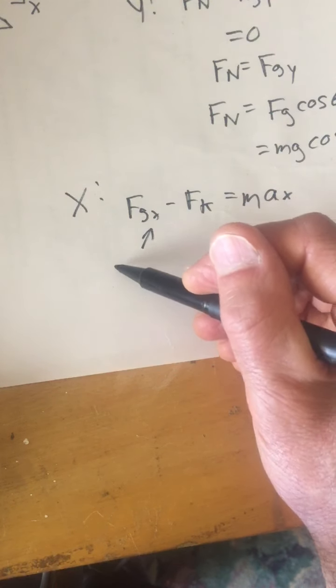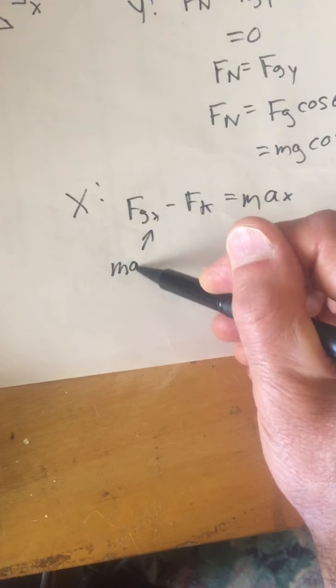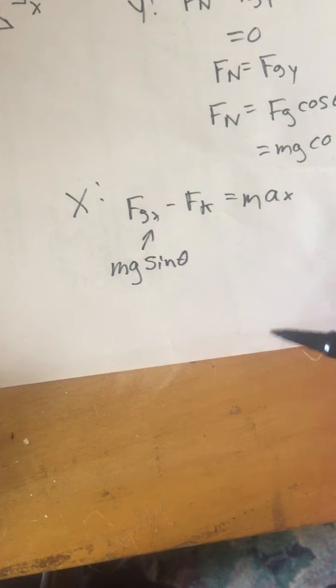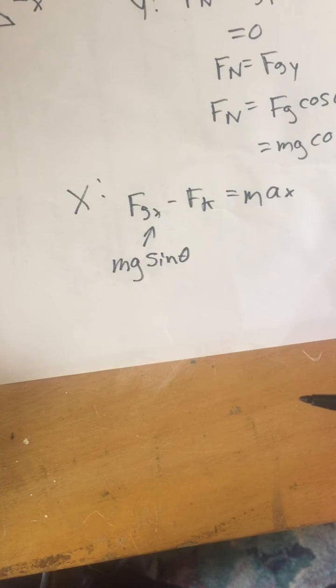Fgx, if you recall, is equal to mg or Fg times the sine of the angle theta. I'll just put mg in there and make that jump from Fg to mg.